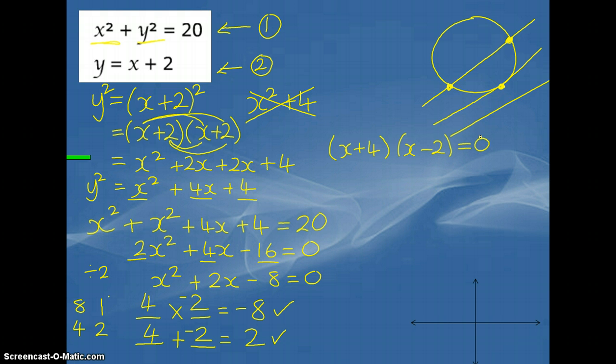So, the x-coordinates of where the line meets the circle is x equals minus 4, and x equals positive 2. Now, we've got the x-coordinates, we just now need to find the y-coordinates.